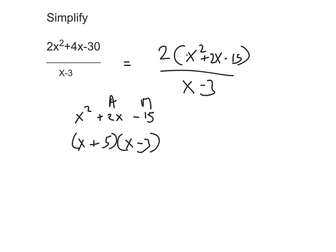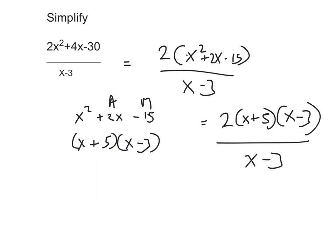Now we replace the trinomial with these two factors, leaving us with 2(x + 5)(x - 3). We can see that the (x - 3) cancels with the denominator, so we're left with simply 2(x + 5), which equals 2x + 10. As I said, what catches most people is thinking there should only be two factors — but in this case we do have three factors: 2, (x + 5), and (x - 3).